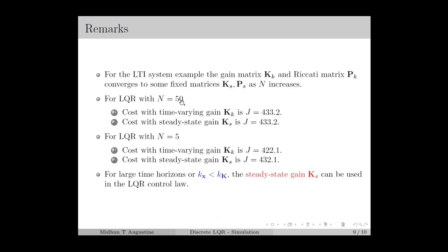For the LQR with the time horizon N equal to 50, we obtain the cost with the time varying gain K_K as given here. And for the steady state gain K_S, we obtain the same cost, which means the performance is not affected. However, for the time horizon N equal to 5, the cost with the time varying gain is obtained as given here, and for the steady state gain K_S the cost is actually increased. Therefore, in general, if the time horizon is sufficiently large, or we have the condition K_X less than K_K, then we can use the steady state gain K_S instead of the time varying gain K_K in the LQR control law without affecting the performance.